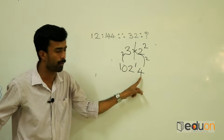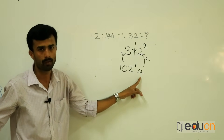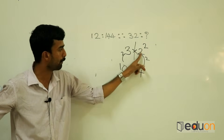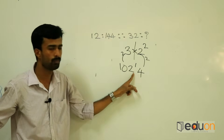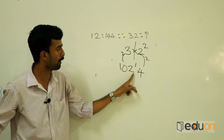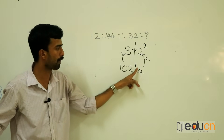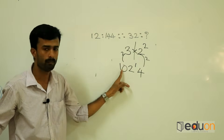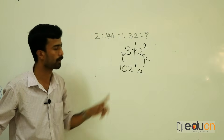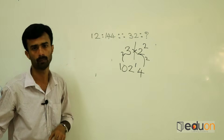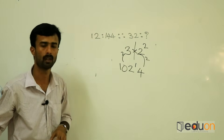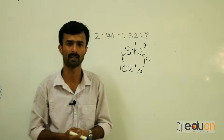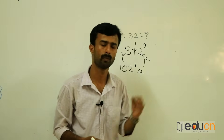2 squared is 4. Multiply by 2. 6 times 2. 9 plus 1. 10 times 4. 2 times 3 — follow these steps.